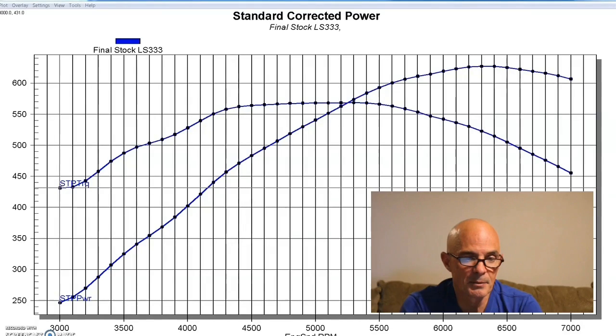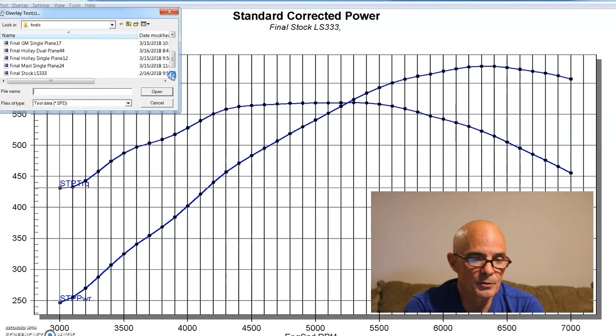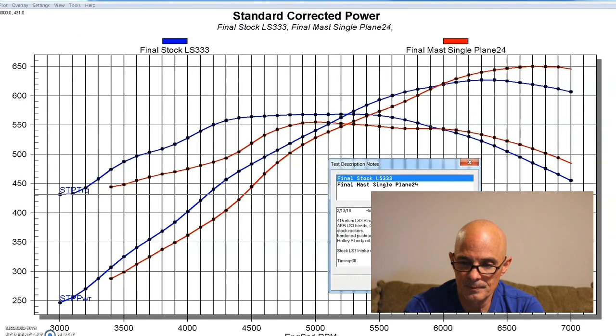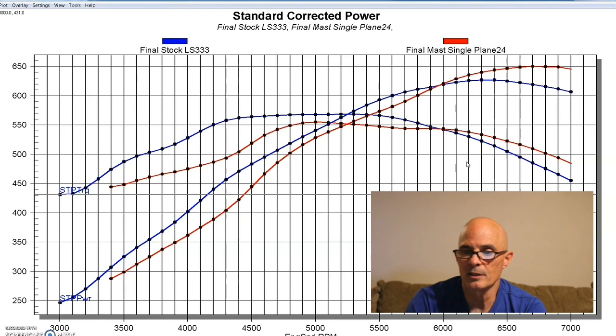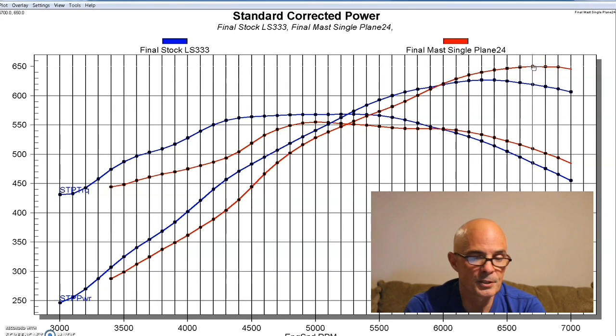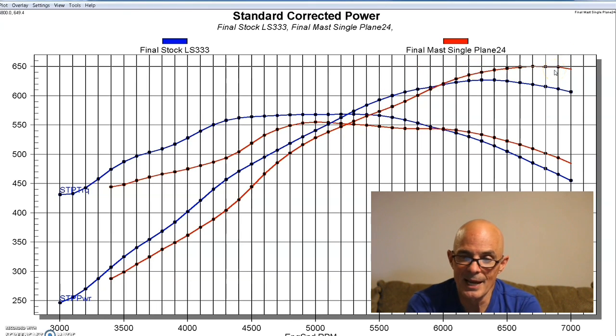After running our TrickFlow single-plane intake, it was time to step up to our Mast single-plane. Like the others, the Mast was run with a 950 Ultra XP carburetor. With the Mast intake, our crossover point dropped down to 6,000 RPM. The Mast produced 650 horsepower. As you can see, like most of the single-planes, dropped down the torque in the 4,000 to 4,500 range. Down that range was missing a little bit here in the middle. But the thing about the Mast is that it's that CNC piece, really pretty impressive looking. It might need more motor, even more than our 416. Here's the power output of the Mast compared to the LS3.